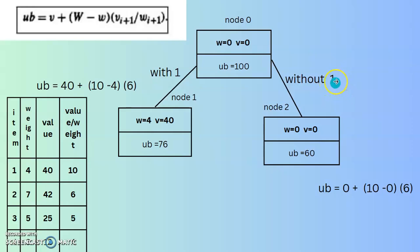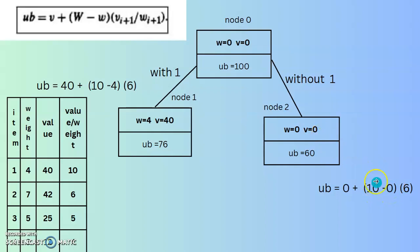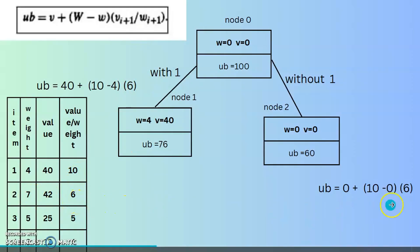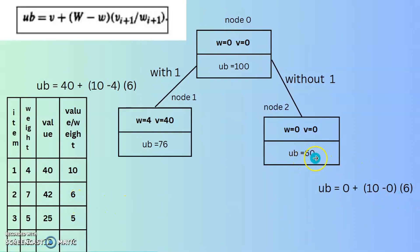Going right (without item 1): w and v remain 0. Apply the formula: upper bound = 0 + (10 − 0) × (42 / 7) = 0 + 10 × 6 = 60. The upper bound for the right subtree (without item 1) is 60.